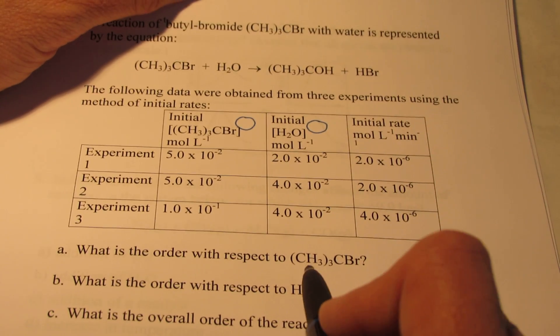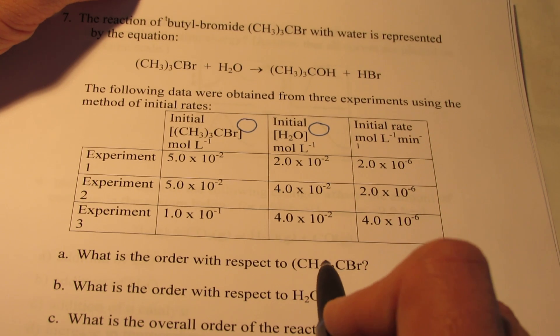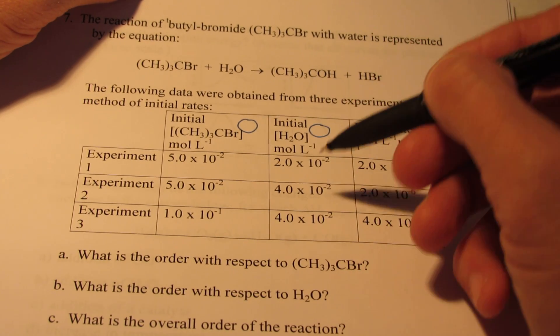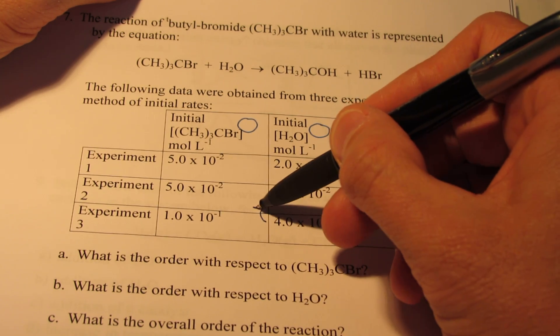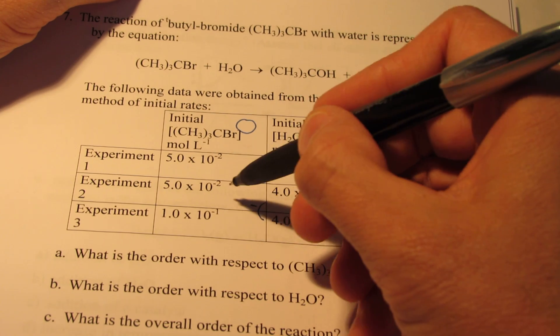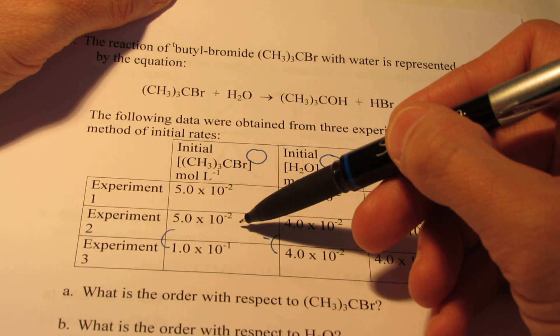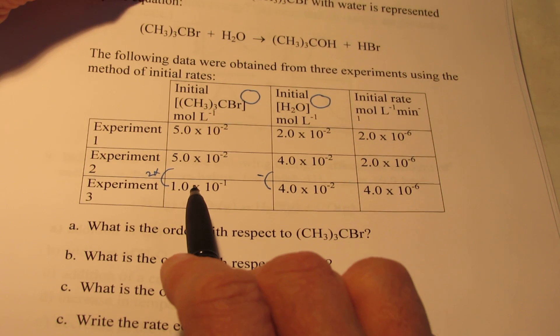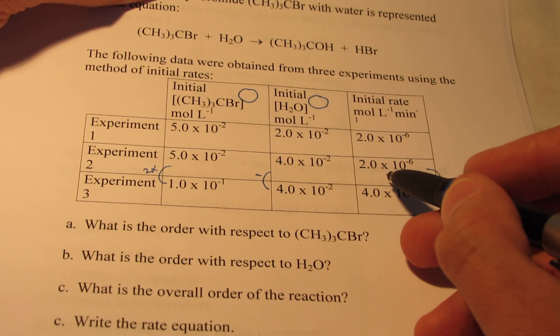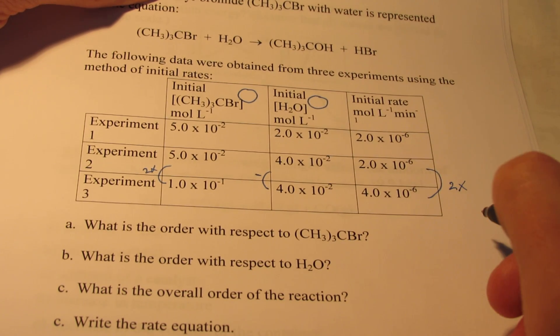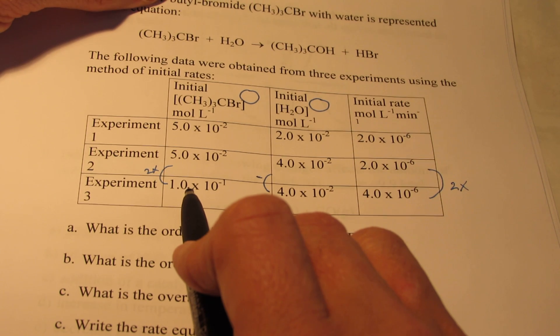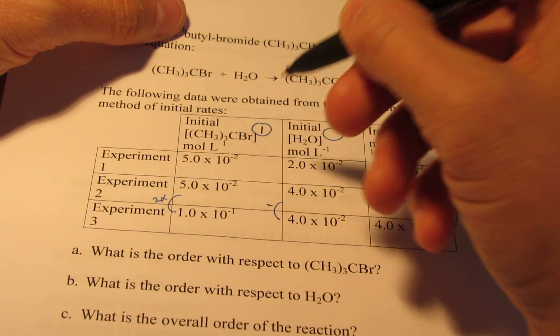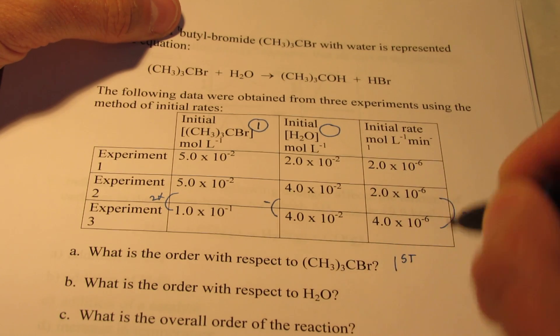So let's first find the order for the butyl bromide, this compound here. And so I want to find it where this is changing, but the other reactant staying constant. So let's take a look. In experiments two and three, do you see how the water vapor is staying constant here? Yet, the butyl bromide is going from 5 times 10 to the negative 2nd to 1 times 10 to the negative 1st. It's doubling. So what's the result of doubling the concentration of this reactant? Well, the rate goes from 2 times 10 to the negative 6 to 4 times 10 to the negative 6. The rate doubles also. So doubling this reactant while keeping this one constant causes the rate to double. That means this reactant is first order.